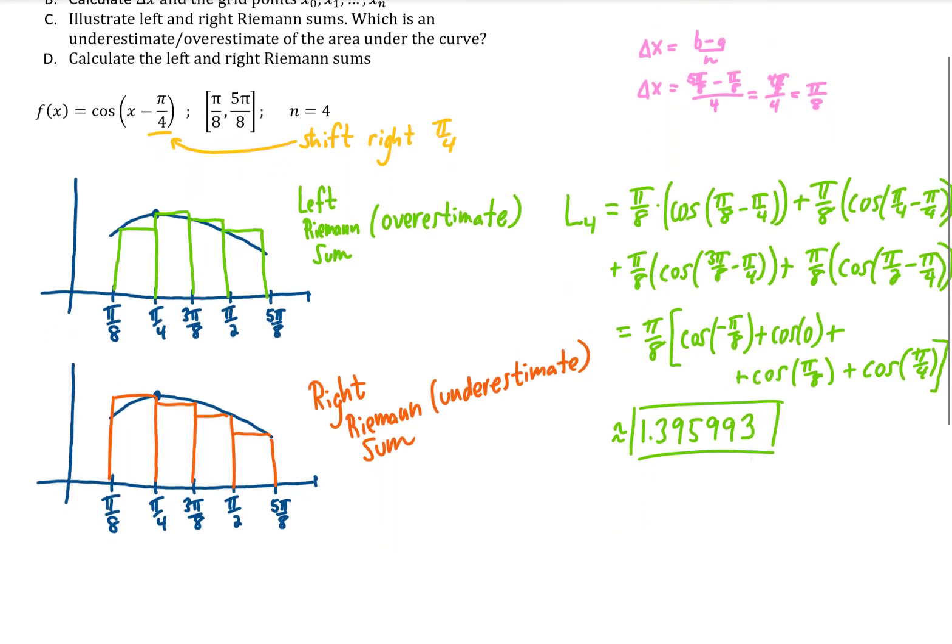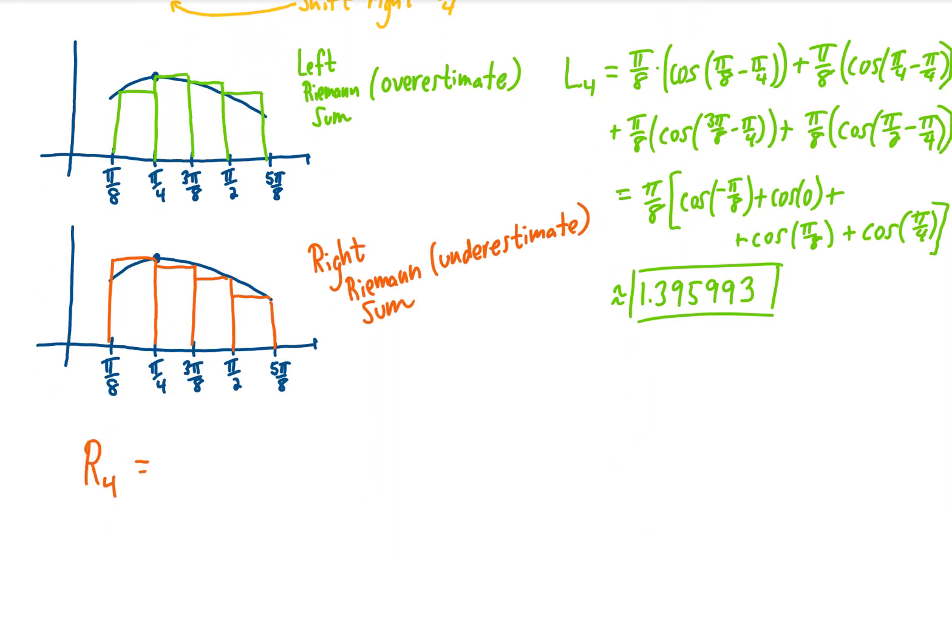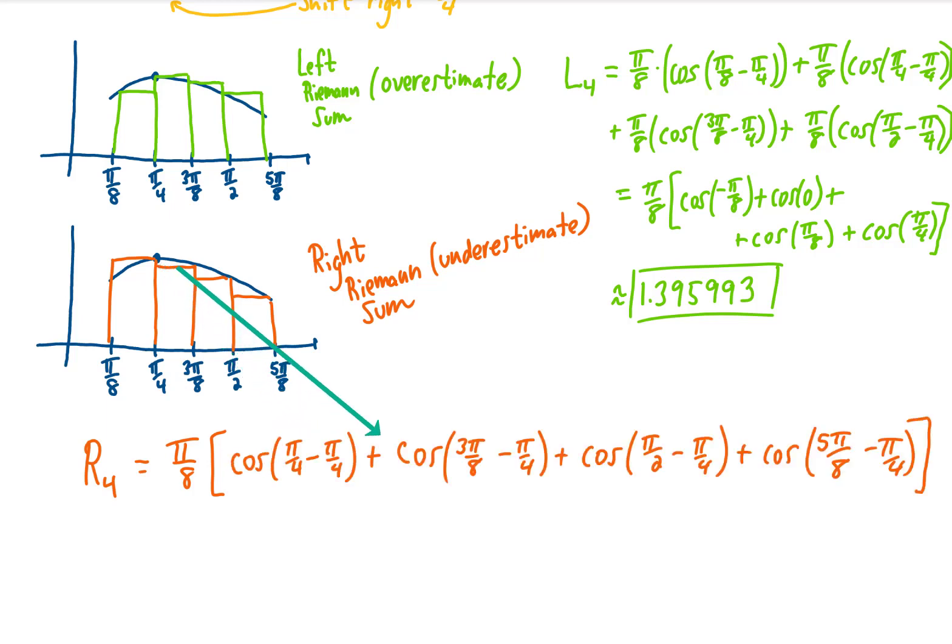Let's do the same calculation with our right Riemann sum. This time, knowing that the width of each of these rectangles is pi over 8, I'm just going to pull the pi over 8 out in front. And then we can just add up all of the heights of each of these rectangles. The height of the first rectangle is given by the value of the function at x equals pi over 4. Adding up the heights of each of those rectangles gives us this, which can be simplified.